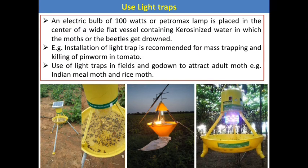Some light trap examples include the solar LED trap and electric light traps, which we can install in our field to attract different nocturnal moth populations. This technique is very effective in tomato to attract pinworm insects. In the case of stored grain products, this light trap can also be installed in our godowns to attract the rice moth and Indian meal moth.